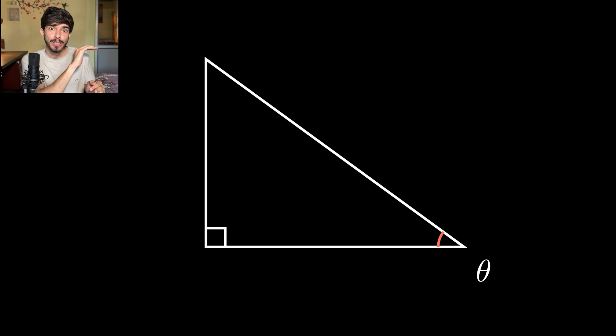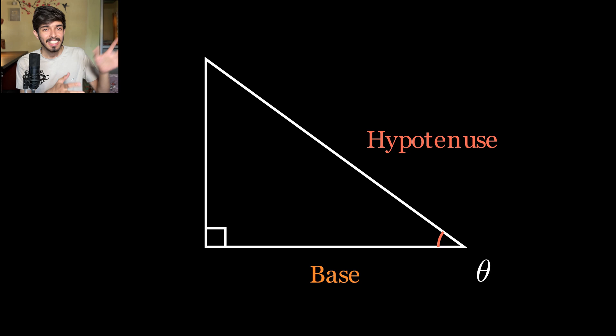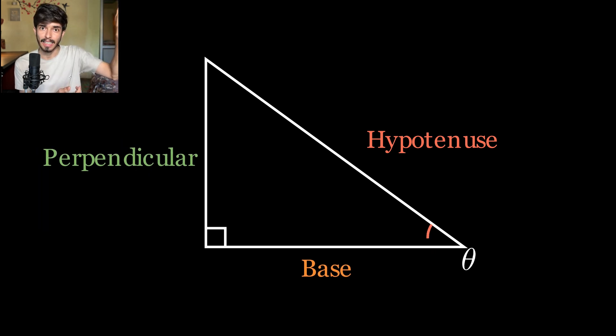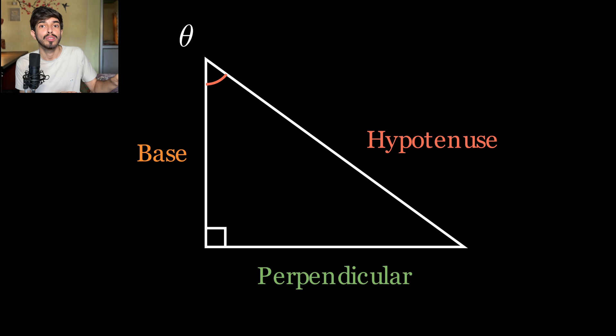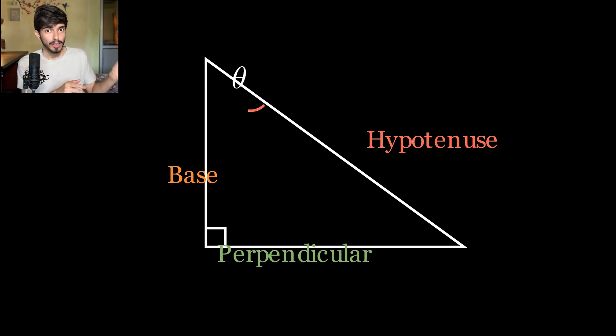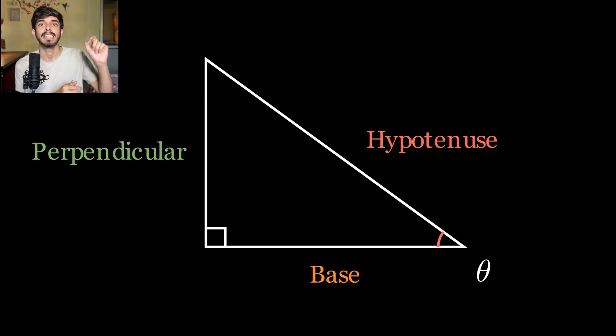Now this lower side which is attached to the theta is known as the base. Like it is the base of the triangle. Now the other side which is attached to the theta is known as the hypotenuse. And the third side, this one is known as the perpendicular. And for this case, we chose to study this triangle from this angle. If you want, you can also choose this angle. Then that would be the base and this would be the perpendicular. This choice of angle from which one you want to study this triangle is an arbitrary choice. And it depends on the type of system you are studying.